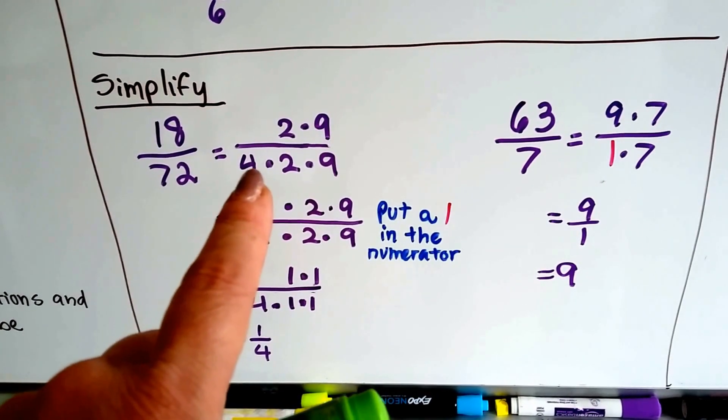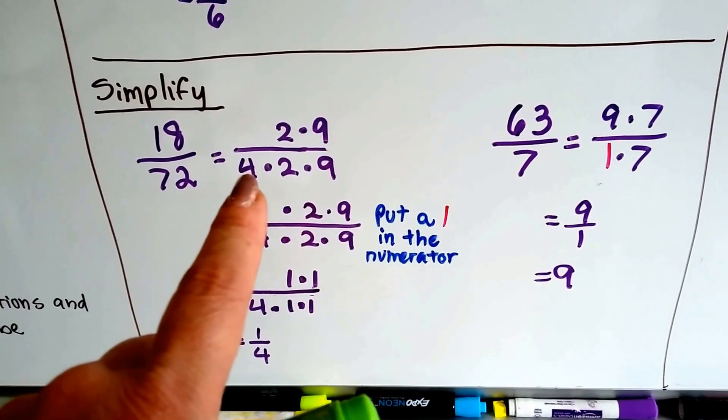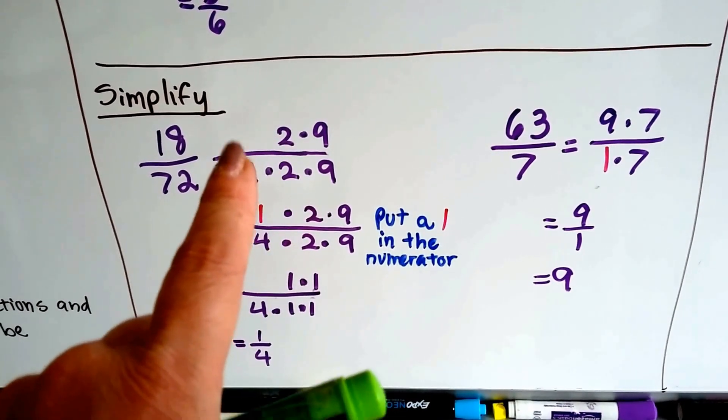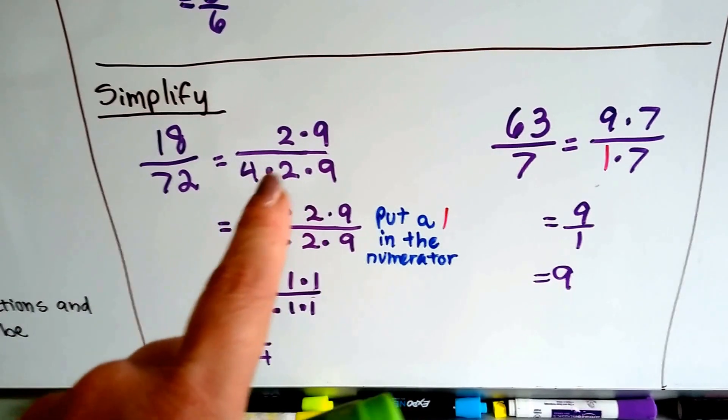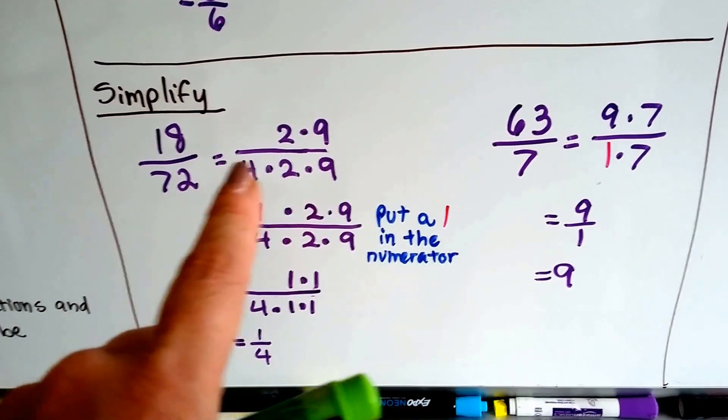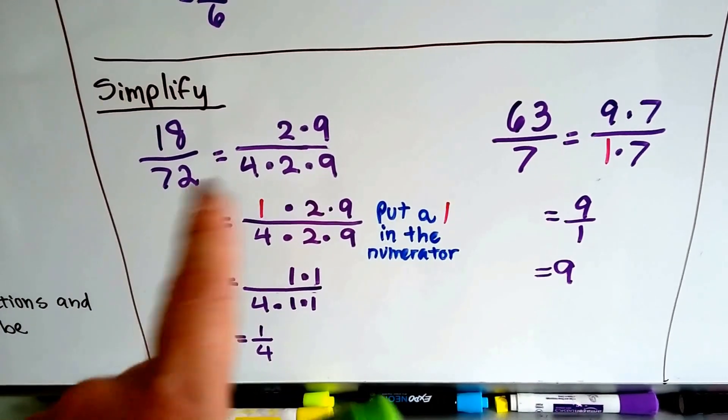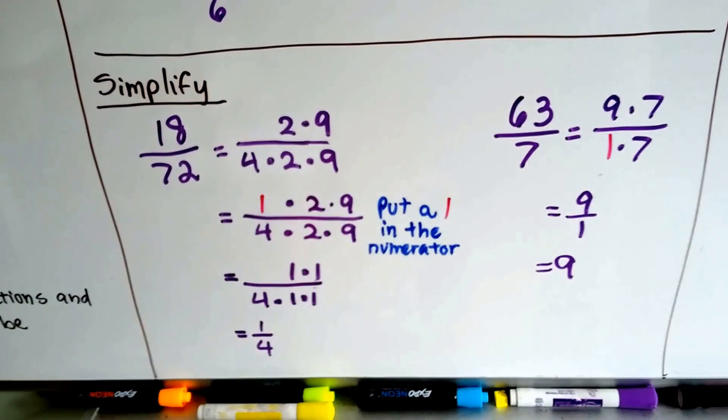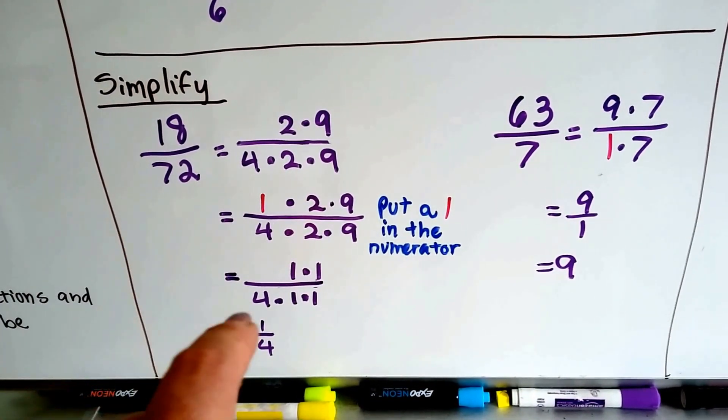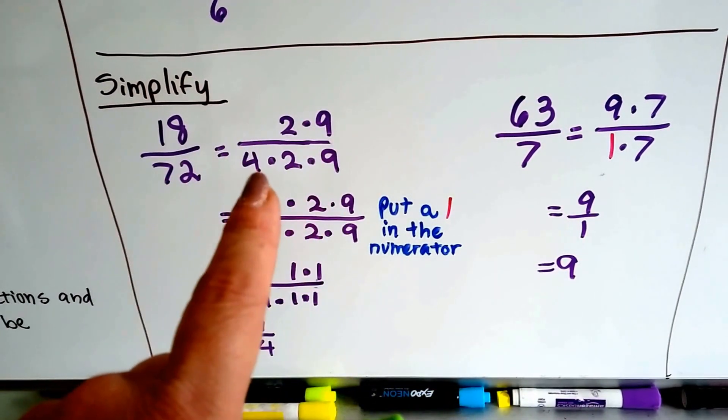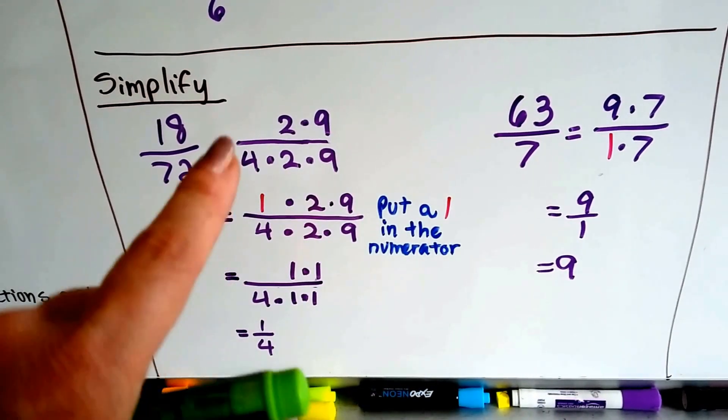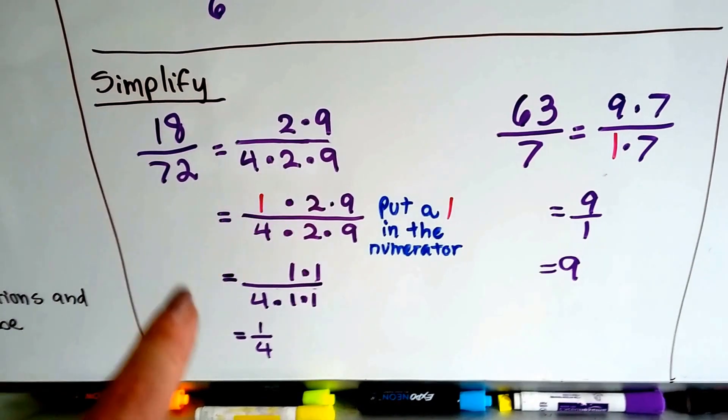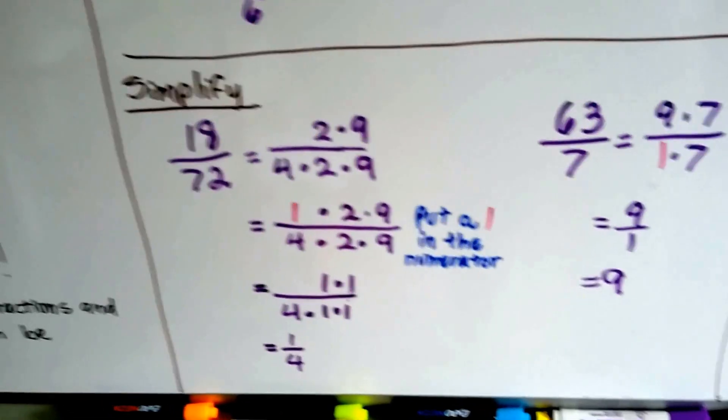So we could have said that this was 18 times 1, and we could have found a factor of 72 as an 18. We could have also done 2 times 9 and 8 times 9, and we would have had 2 over 8, which would have been 1 fourth.